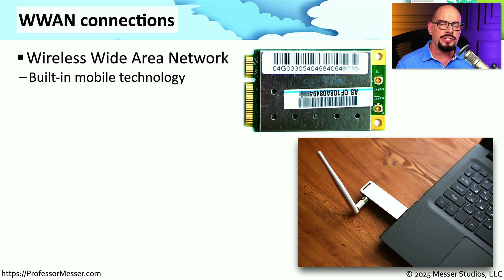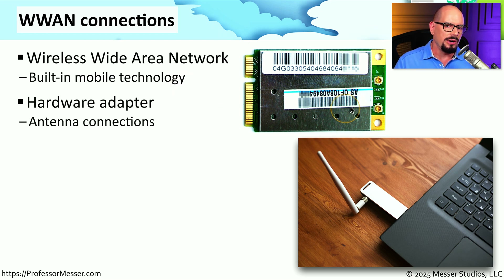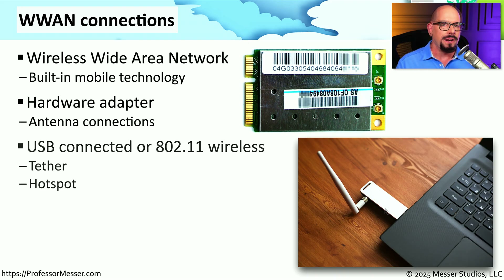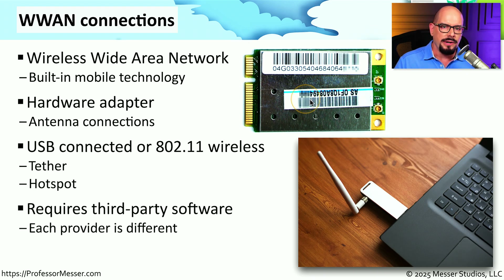Another type of connectivity is using the cellular networks that we normally associate with our smartphones and tablets. This is referred to as a wireless wide area network, or WWAN connection. This could use a physical network interface card, like the hardware adapter shown on screen, or it may be something you're plugging into a USB interface. You might also connect to a wireless wide area network using your smartphone — you can connect via a tethered connection, or use your smartphone as a hotspot to gain access to the internet. If you're using a hardware adapter, either one built internal to your system or one that plugs into USB, it might require third-party software to connect to the network, so check the documentation of your device to confirm you have all of the software corresponding to your hardware.